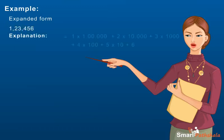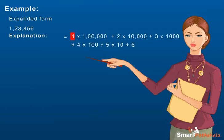Explanation: The expanded form is 1 × 1,00,000 + 2 × 10,000 + 3 × 1000 + 4 × 100 + 5 × 10 + 6.